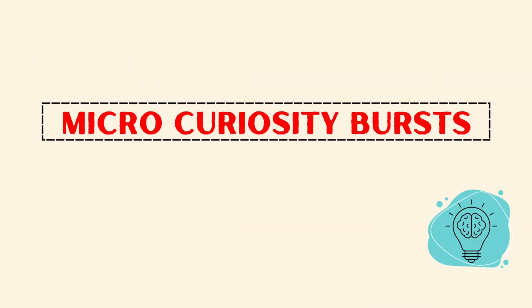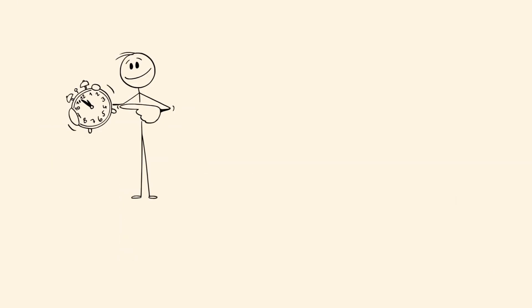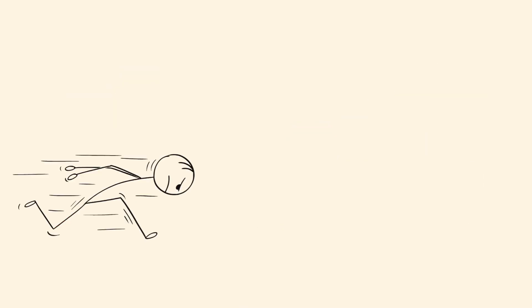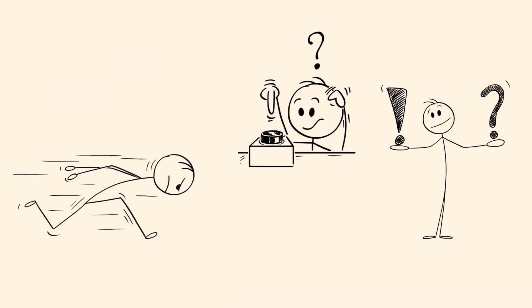Micro-curiosity bursts. Brain stretching before deep work. Before his afternoon work sessions, Ethan sets a timer for five minutes to explore random questions. How do whales sleep? Why does deja vu happen? This keeps his brain agile, curious, and ready for divergent thinking.